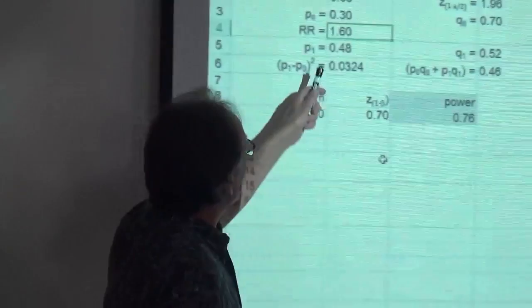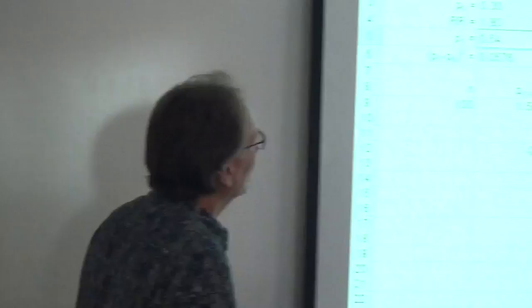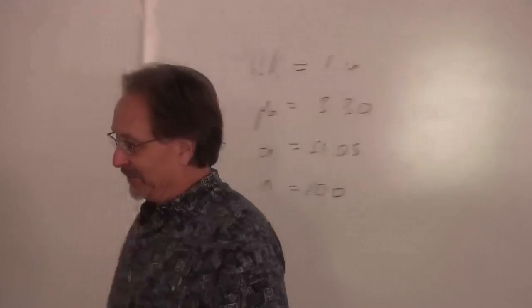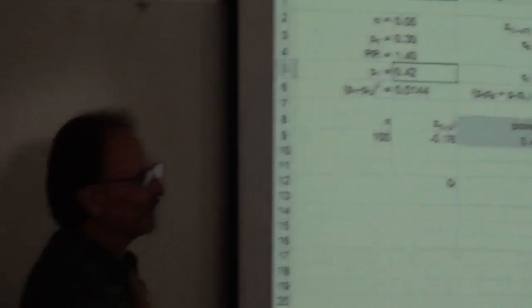Another thing we could do is expect poorer resolution — instead of detecting a relative risk of 1.6, increase it to 1.8. Just a slight decrease in resolution increases power. At 1.7, we've got 0.87 power — that doesn't cost us anything, but it reduces resolution. Conversely, if we decrease to 1.4, power drops all the way to 43%, which isn't great.